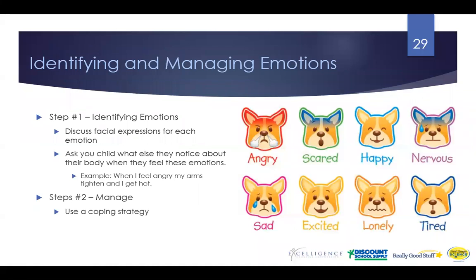This is probably the most important thing for young kids to learn: identifying and managing emotions. First, talk about how to identify emotions — when you feel angry, what does your face look like? What does your body do? Do your arms tighten up? Does your face get hot? Once they're able to identify different emotions and use this language, then you teach them coping strategies for when they're feeling negative emotions. If I'm feeling sad, what can I do to make myself feel better and get back to a comfortable place?